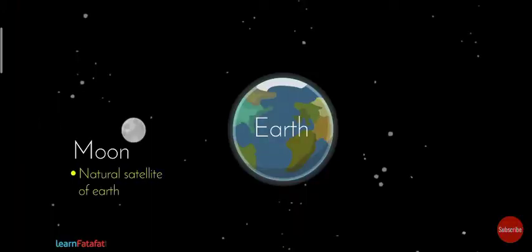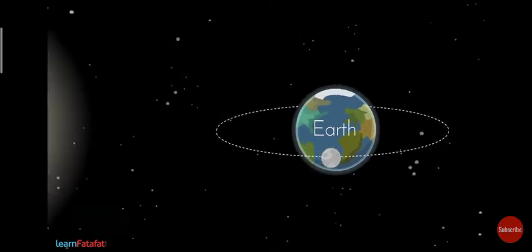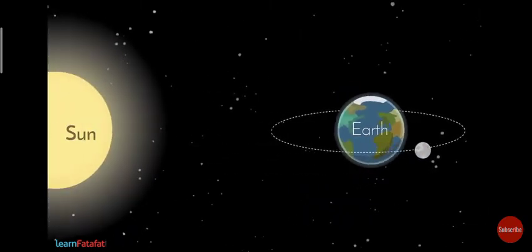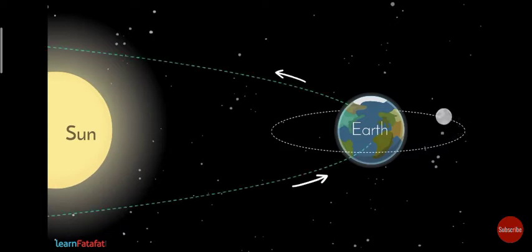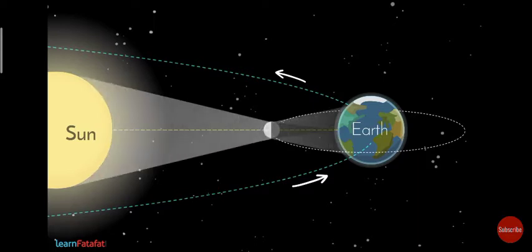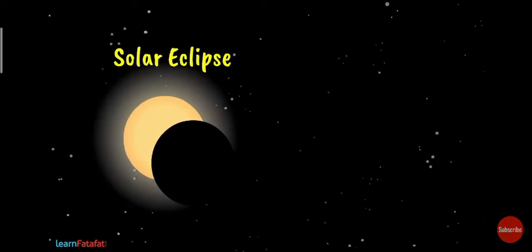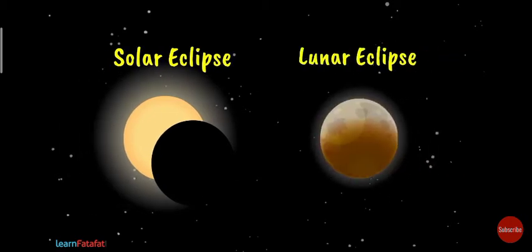We live on Earth, and the moon revolves around the Earth, and the Earth revolves around the Sun. The Earth gets light from the Sun, and the moon reflects sunlight. Sometimes the Sun, moon, and Earth are in one straight line, and then an eclipse occurs. Let's see how a solar eclipse occurs.